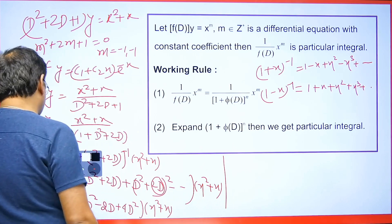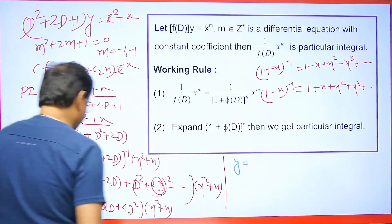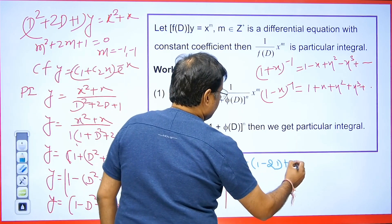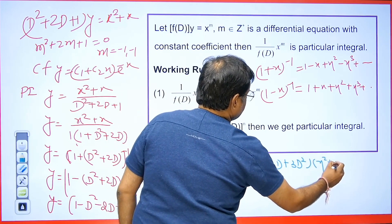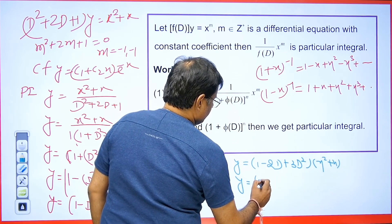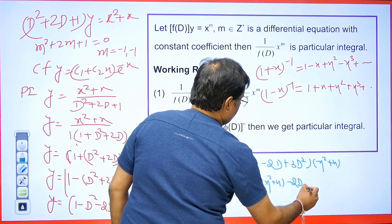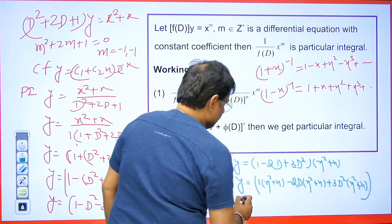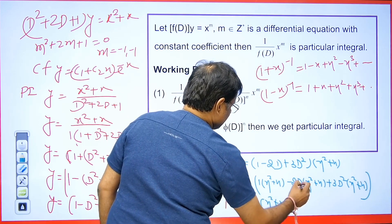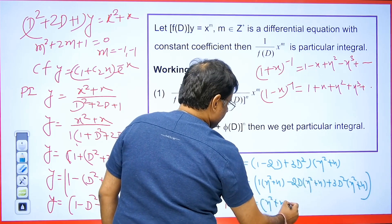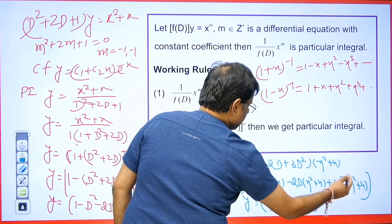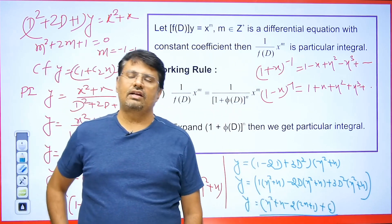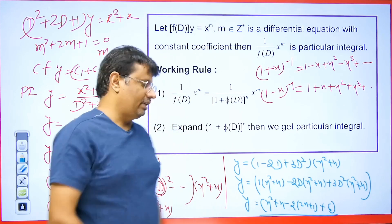So combining: 1 minus 2D and minus D square plus 4D square gives plus 3D square. Multiplying by x square plus x: this is 1 into (x square plus x), minus 2D multiplied by (x square plus x), plus 3D square multiplied by (x square plus x). Differentiating once gives 2x plus 1, so minus 2 into (2x plus 1). Differentiating again gives 2, so 3 times 2 equals 6. We get PI on simplifying, and the final answer will be CF plus PI.